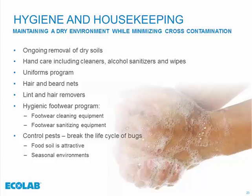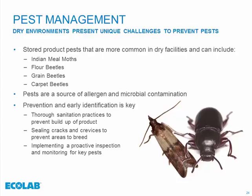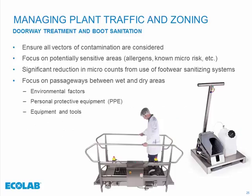Pest management is another area to consider. Many of the soils in these facilities are attractive to pests, so to minimize the need for a reactive pest program, maintain ongoing dry removal and identify which pests will be most problematic. Indian meal moth, flour beetles, and grain and carpet beetles are common ones. They are a real source of contamination — if they touch a surface that has pathogens or allergens, they become a cross-contamination vehicle. Prevention and early identification is key; we want to prevent pests from coming in before we have to react, as that can be costly.